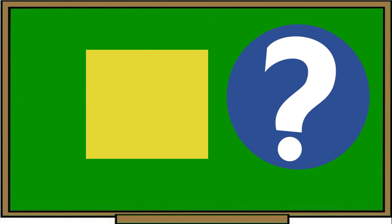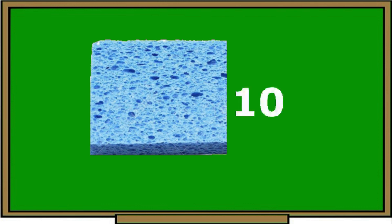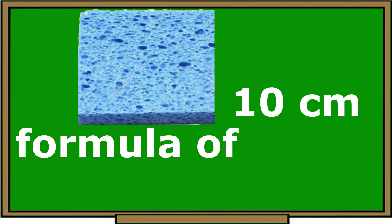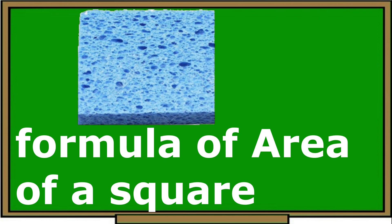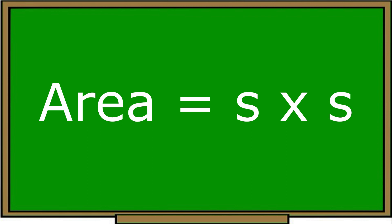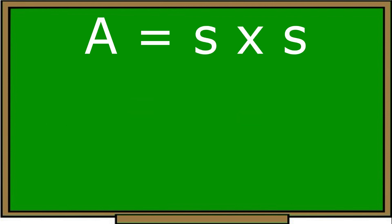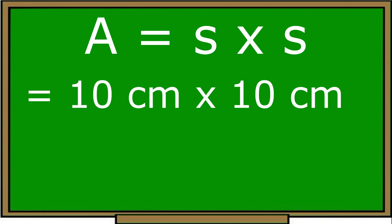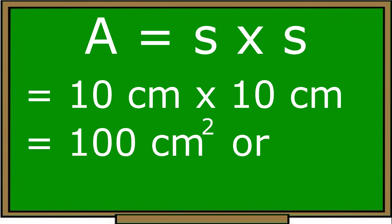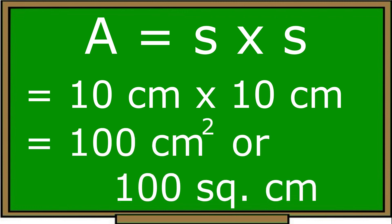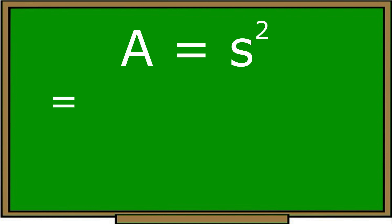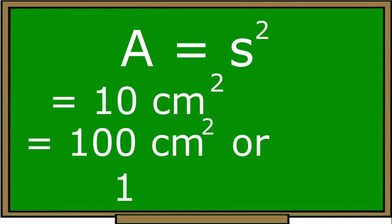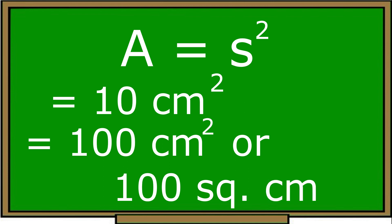What figure is this? Correct! This is a square. What object is this? Great job! This is a sponge. A sponge has a side that measures 10 cm. We use the formula of a square: area equals side times side, or area equals S squared. The side is 10 cm, so 10 cm times 10 cm equals 100 cm². The area of the sponge is 100 cm².